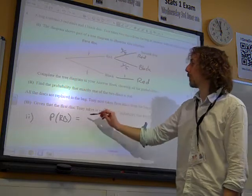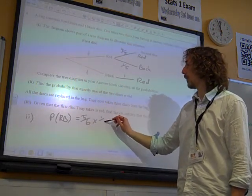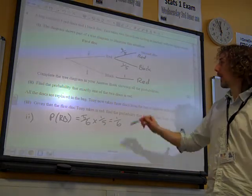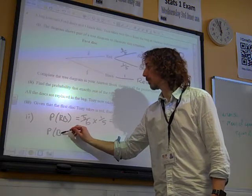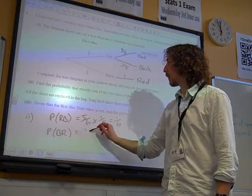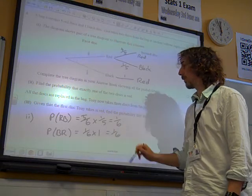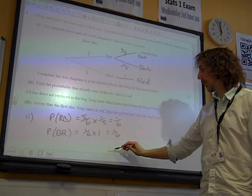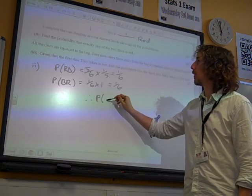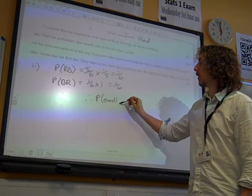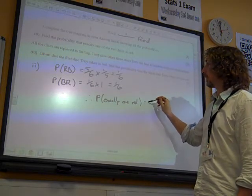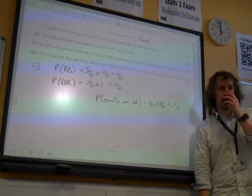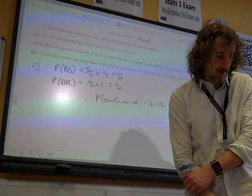Red then black was five-sixths followed by one-fifth, which is probability of one-sixth. And then black, then red, that was one-sixth times one, which is one-sixth. And the probability of either of those two events happening is one-sixth plus one-sixth, which is a third, isn't it? Two-sixths gives us exactly a third as our probability for that.